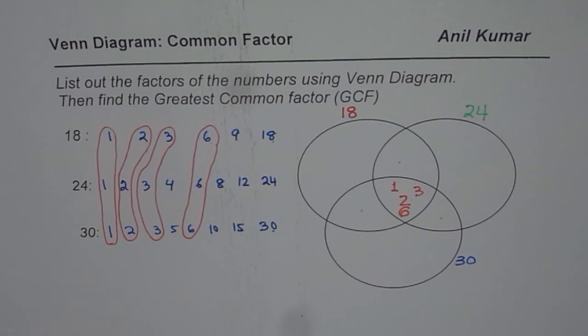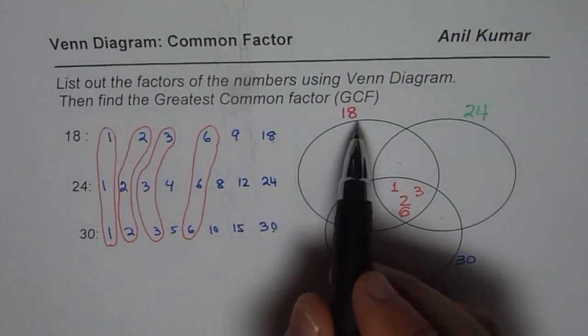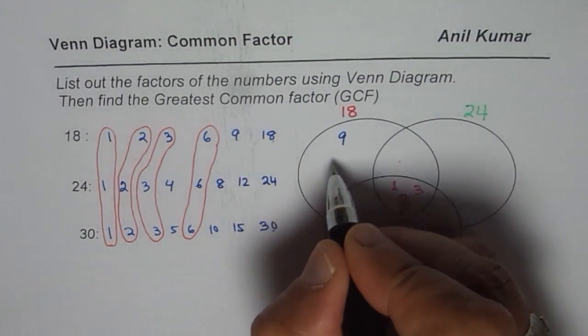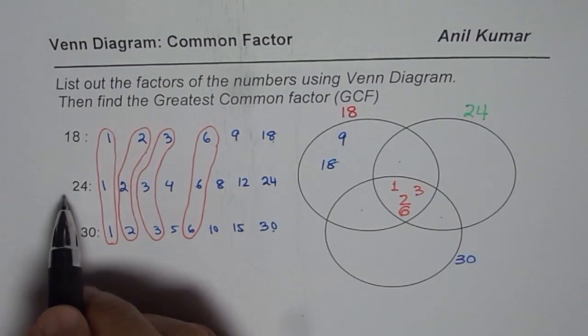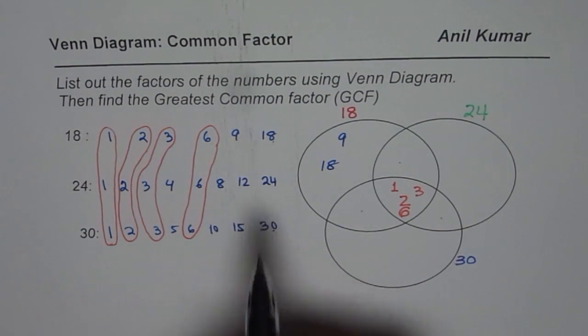The rest of the numbers will take the place in these bigger portions. So for 18, the two numbers left are 9 and 18. So we will write 9 and 18 here. For 24 we have 4, 8, 12, 24.